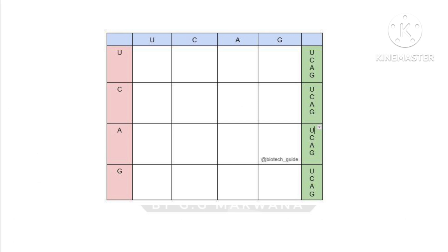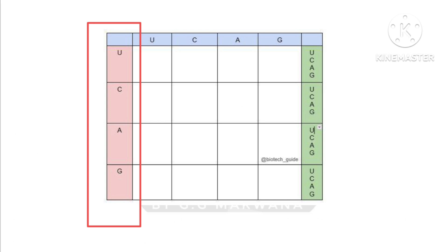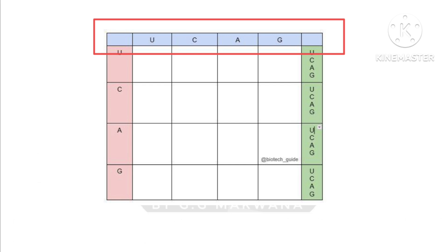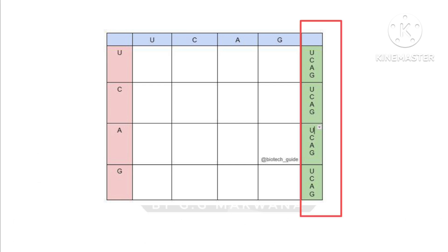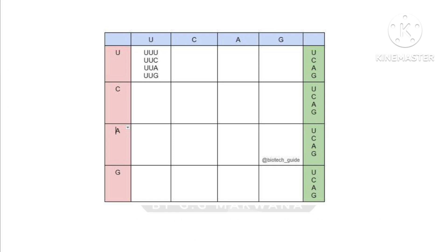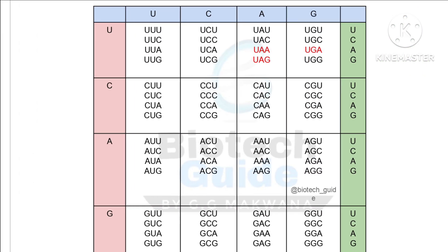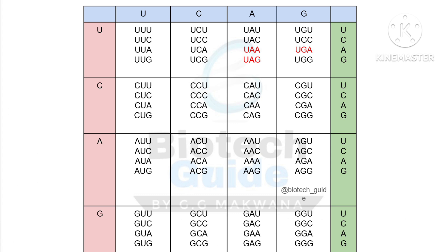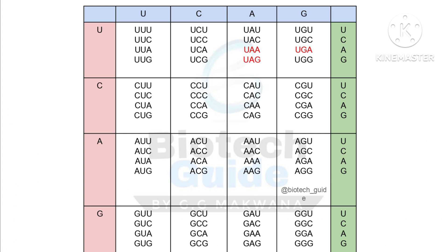Now we'll discuss the classification chart of the genetic code. Draw a table where on the left side you write U, C, A, G, and along the top also U, C, A, G. On the right side, in each row you write U, C, A, G again. Then take the first letter from the left column, the second letter from the top row, and the third letter from the right column. Follow this pattern to write down all 64 codons. The genetic code classification chart is now ready.